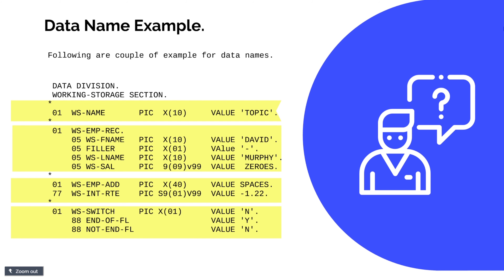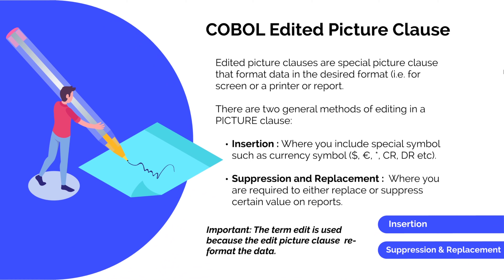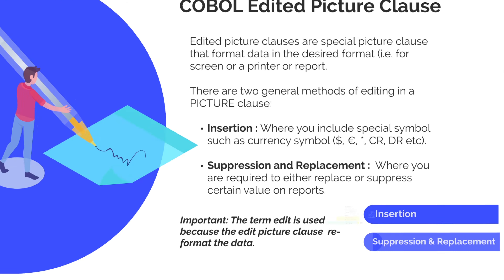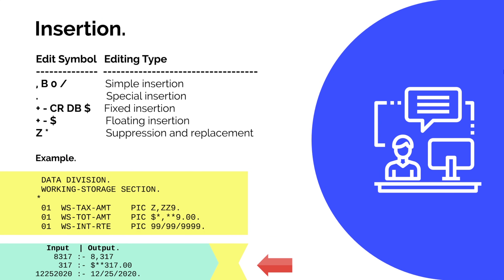Now let's discuss the edit picture clause. COBOL edited picture clauses are special picture clauses used to format data in a desired format — for example, printing a check amount on a report or including a currency symbol before a transaction amount. There are two general methods of editing: insertion, where you include an additional symbol such as euro, pound, or debit/credit indicators; and suppression or replacement, where you remove or replace specific values you don't want displayed on a report or screen.